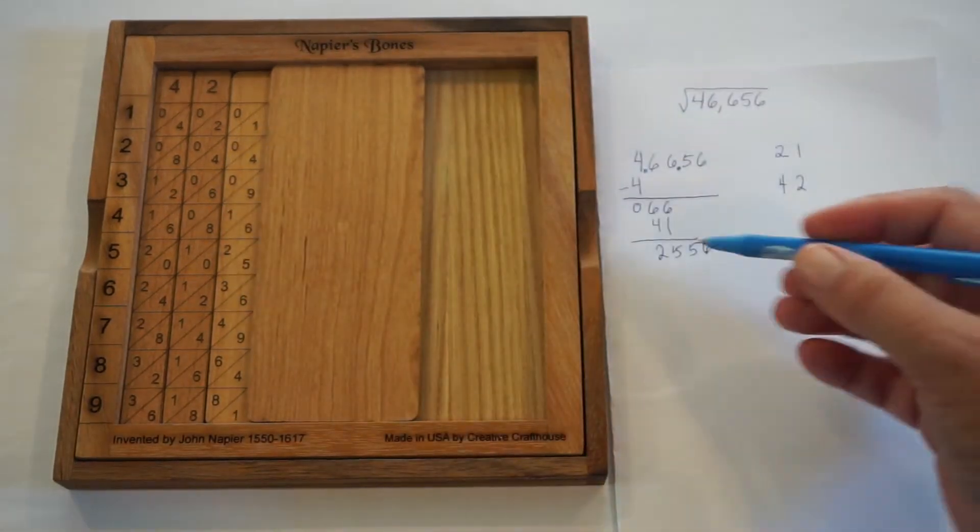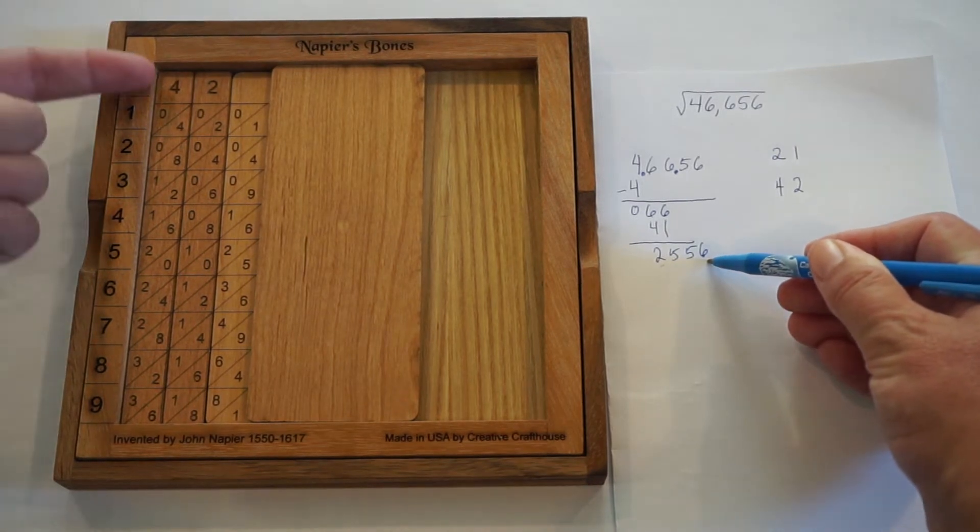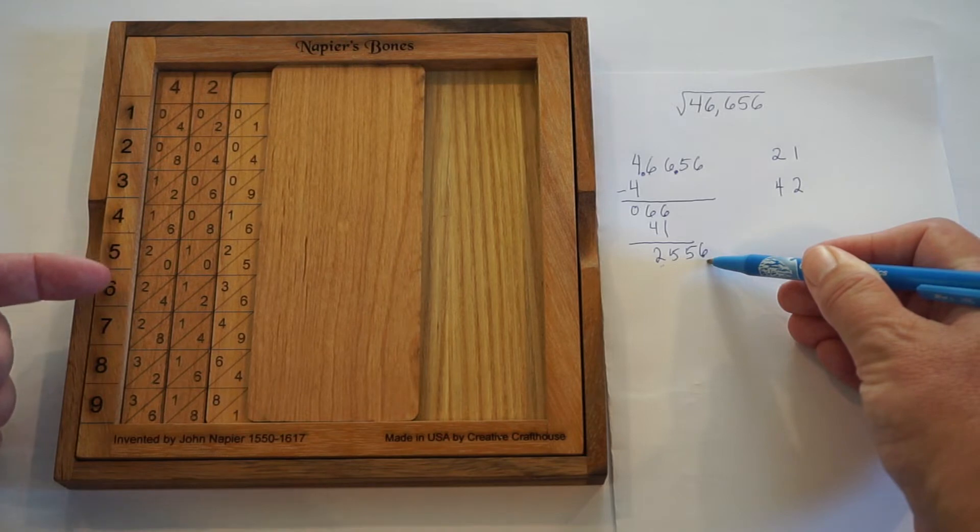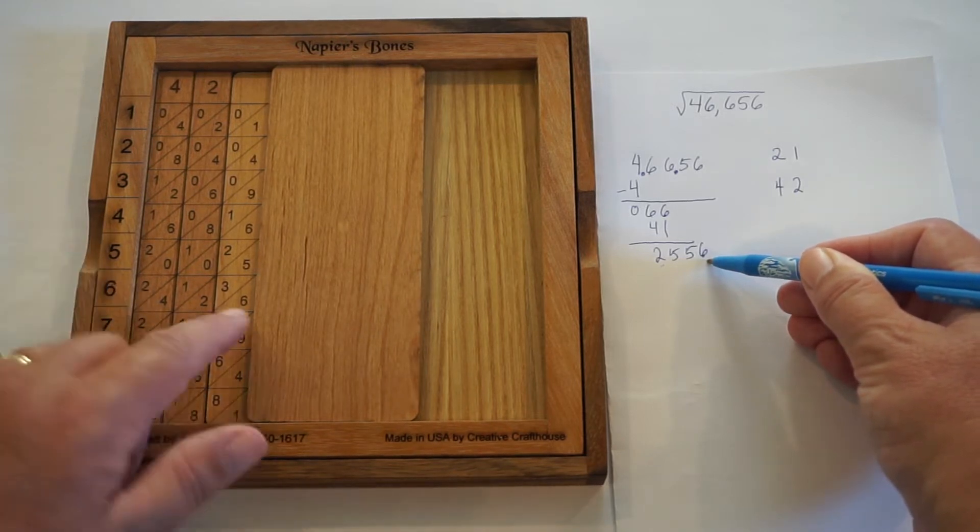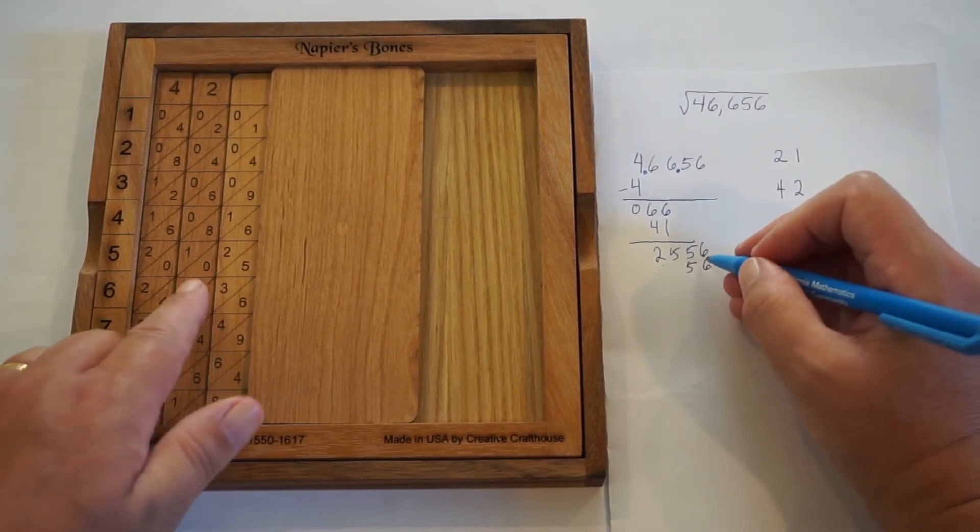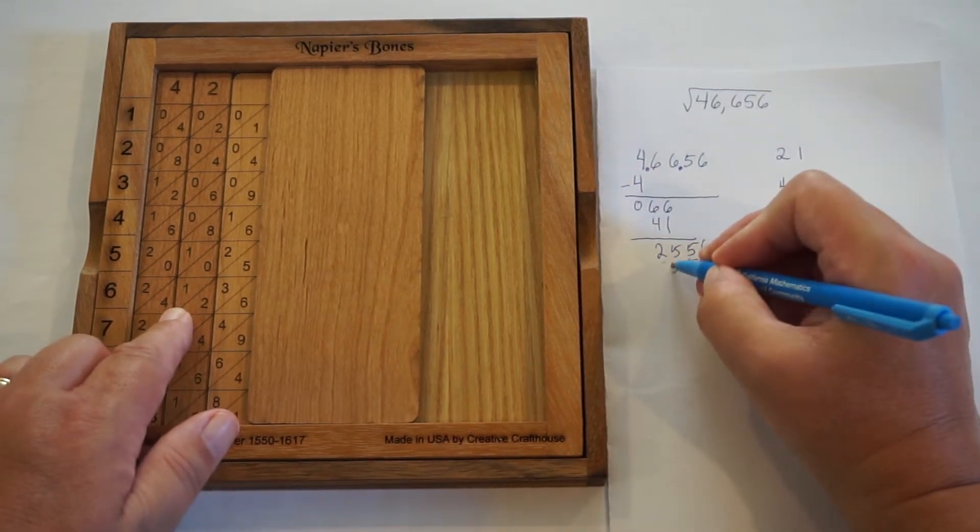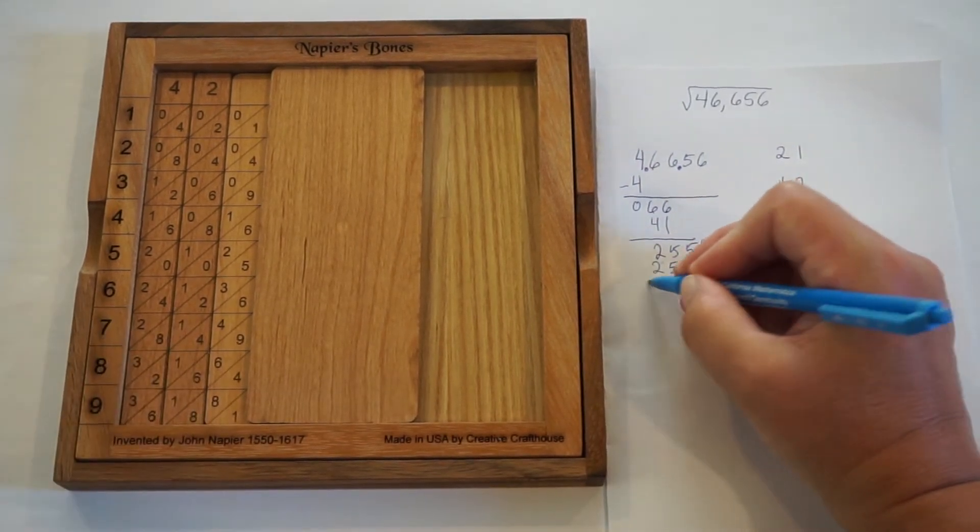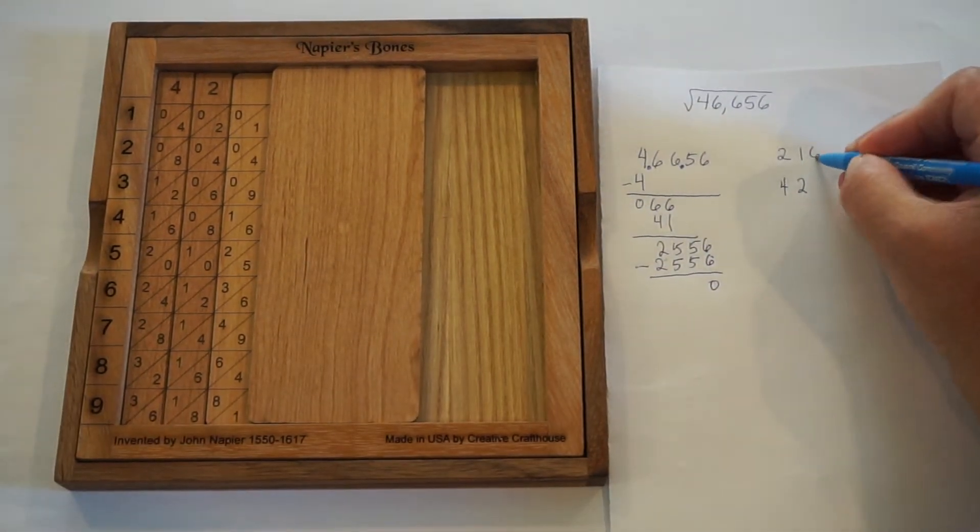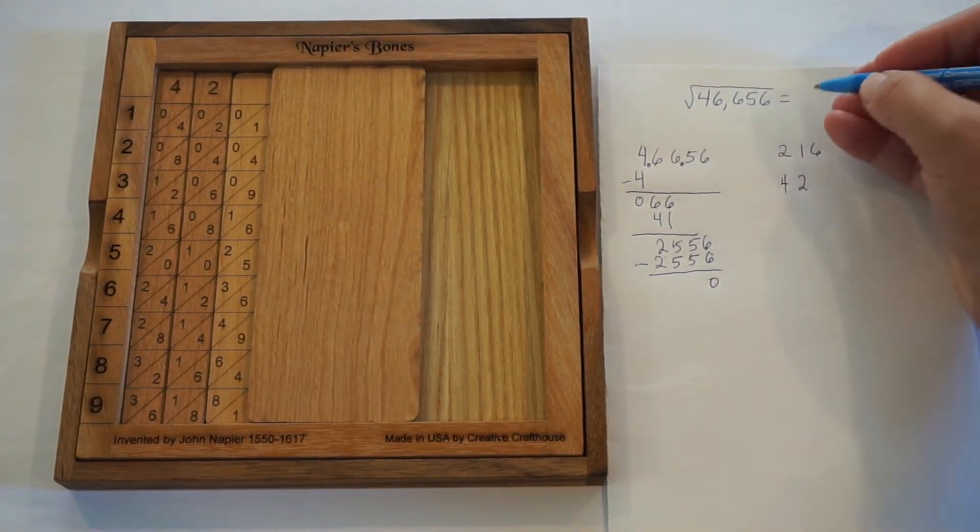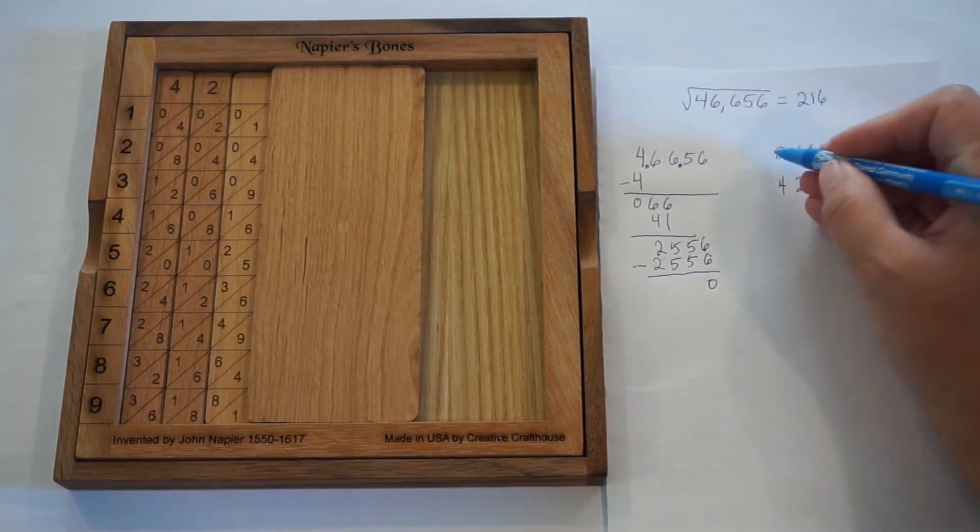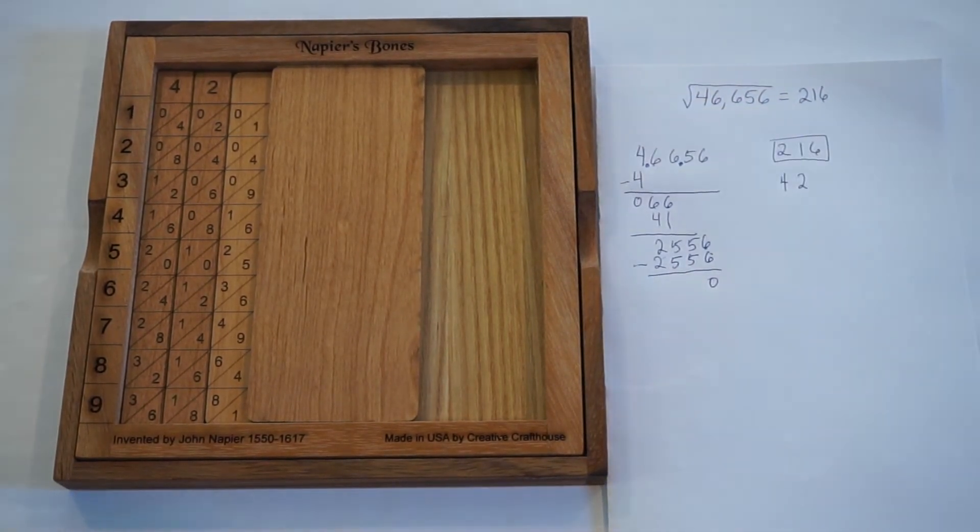So now we're looking for something close to 2,556 without going over. This is a 421 and 844. We need to keep going. And as I look here next to the 6, I see in the 1's place a 6. In the 10's place, 2 plus 3 is 5. In the 100's place, 4 plus 1 is 5. And then we've got a 2 in the 10's place. That goes in exactly. And this was a 6. So the result is that the square root of 46,656 is 216. This is our answer right here.